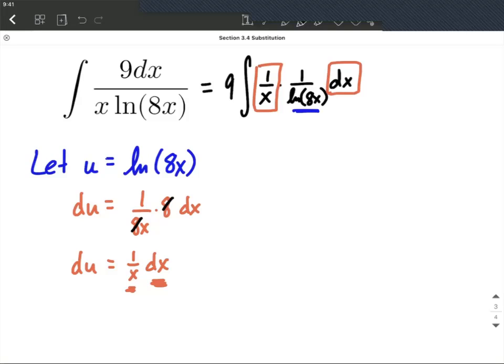So what does that all look like as we put these pieces together? Well, the 9 from out in front comes along. I'm going to go 1 over u and then 1 over x dx all gets replaced with du. We could have rearranged it so they're right next to each other but everything's multiplied so we're going to replace all of those with du.